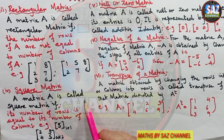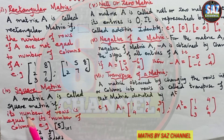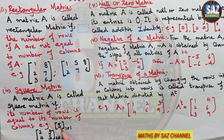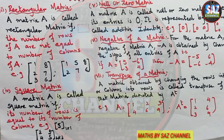Coming to the square matrix — we get the idea from the shape square, where all four sides are equal. A matrix is called the square matrix if its number of rows is equal to the number of columns. For example, a single element has one row and one column, and the matrix 2, 3, 4, 5 has two rows and two columns. So in a square matrix, rows and columns are equal.